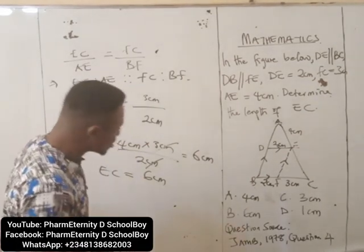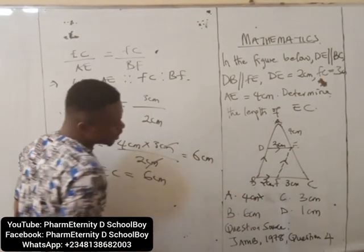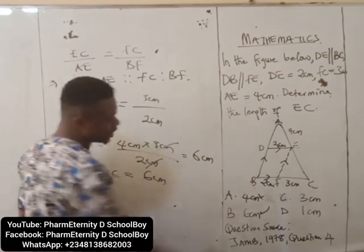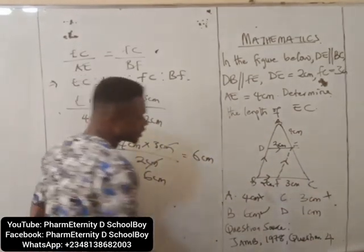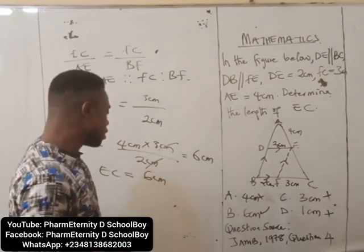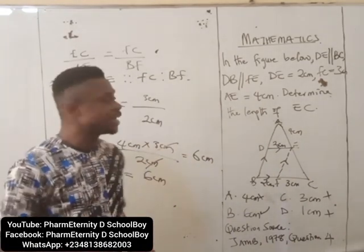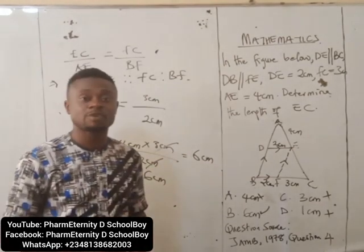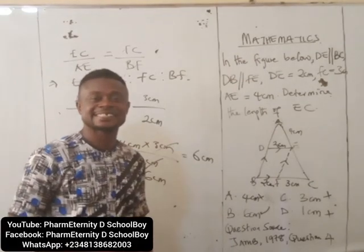Now let's look at the options. Option A says 4cm — I won't pick it. Option B says 6cm — I'll pick B. Option C says 3cm — I won't pick it. Option D says 1cm — I won't pick it. So the most appropriate option is Option B, 6cm. The answer to JAMB 1978 Mathematics Question 4 is B, 6cm.